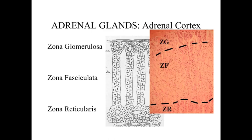Looking at the adrenal cortex, we're going to see an area sitting underneath a dense connective tissue capsule with three distinct zones. We're going to have the zona glomerulosa — a glomeruli-like cluster of cells up towards the top — the zona fasciculata, which are straight fascicles of cells through the middle, and then the zona reticularis, which is a network of cells down towards the bottom as we get closer to the adrenal medulla.